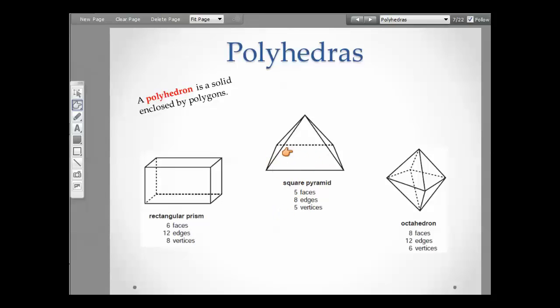Then we have a square pyramid, and the reason we call it a square pyramid is because the bottom of it is a square. It kind of looks like a rectangle in this picture, but we're going to go with them that it's a square. It has five faces, eight edges, and five vertices.